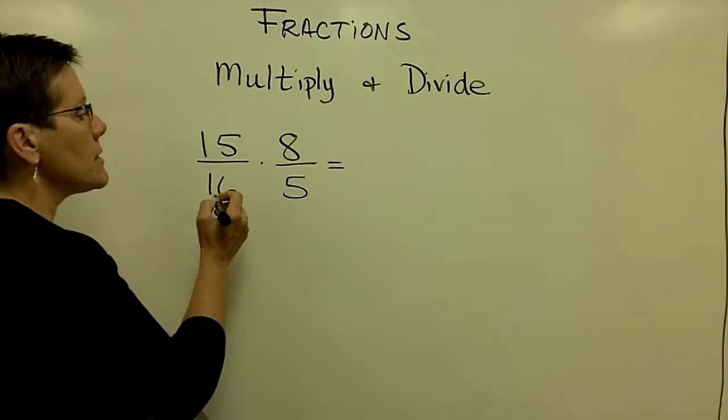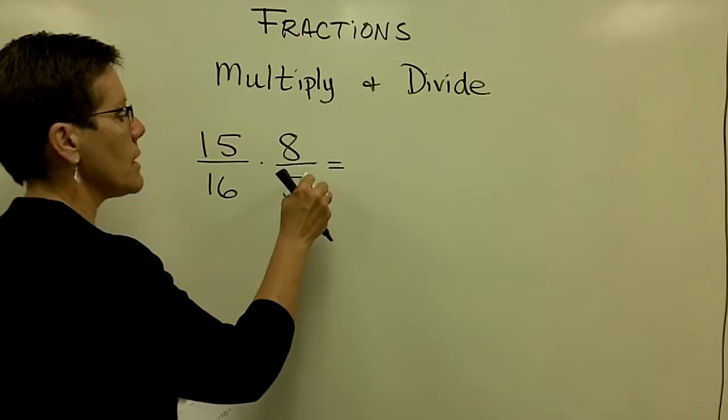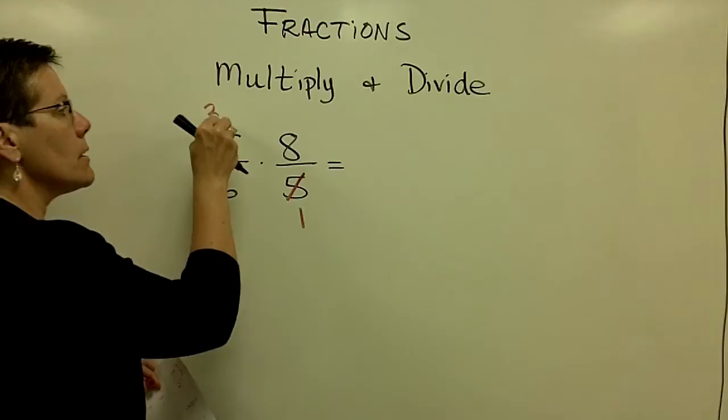15 sixteenths times 8 fifths has common factors in the numerator here and the denominator there, a common factor of 5. I can remove those factors by saying 5 goes into the number 5 one time and 5 goes into the number 15 three times.